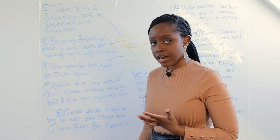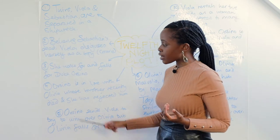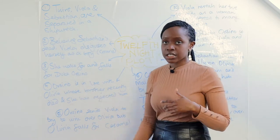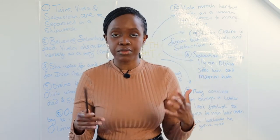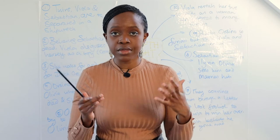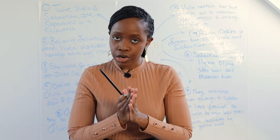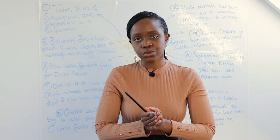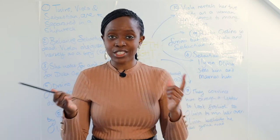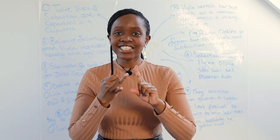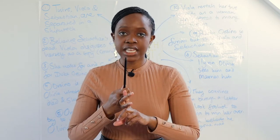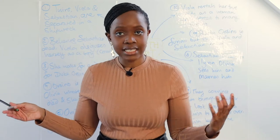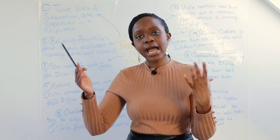The setting is Illyria, and once Viola disguises herself as Cesario, she seeks employment with Duke Orsino, the Duke of Illyria. While working for him, they develop a real close connection and she falls in love with him. However, she can't act on it — she is presenting as a man and is of a much lower class.